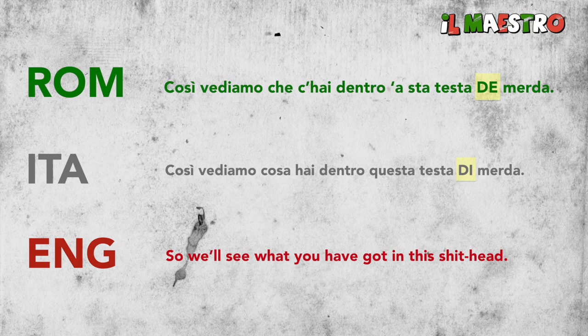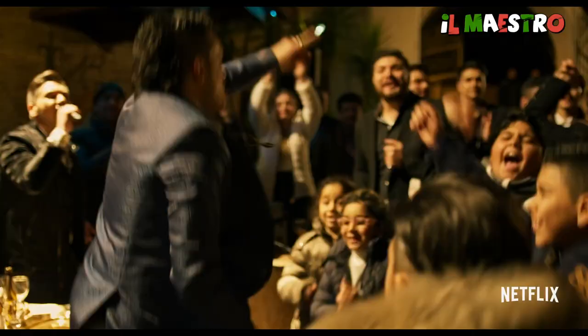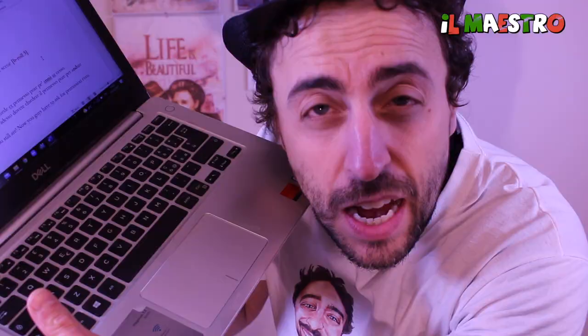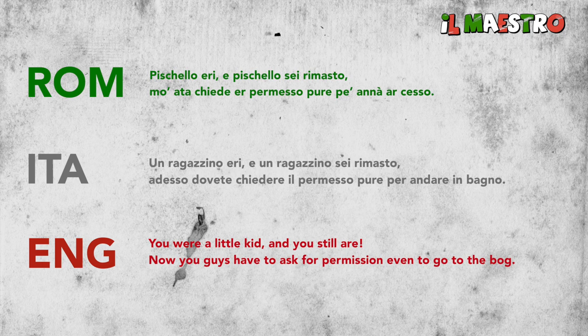Numero tre: assimilazione consonantica — consonant assimilation. Clip: 'Pischello eri e pischello si è rimasto. Mo ha da chieder permesso pure per annarci esso.' Standard Italian: 'Un ragazzino eri e un ragazzino si è rimasto. Adesso dovete chiedere il permesso pure per andare in bagno.' — 'You were a small kid and you still are. Now you guys have to ask for permission even to go to the bog.' Like in Neapolitan and most southern Italian dialects, ND becomes NN. We can see this consonant assimilation in 'andare' becoming 'anna.'